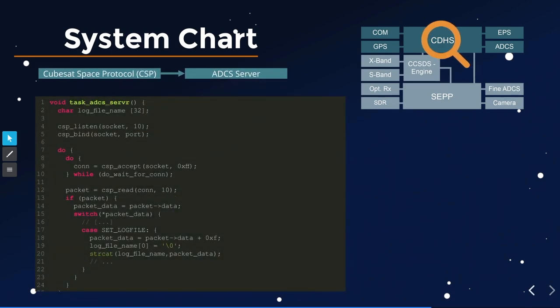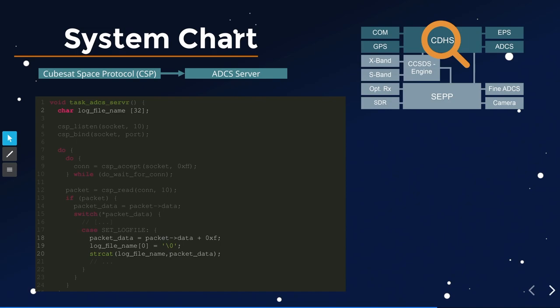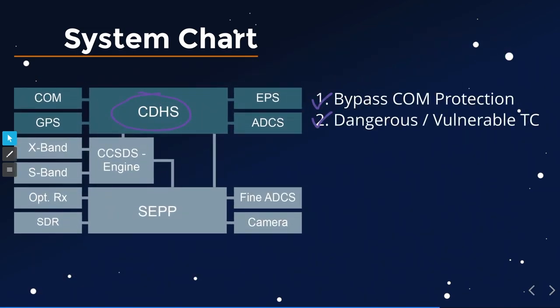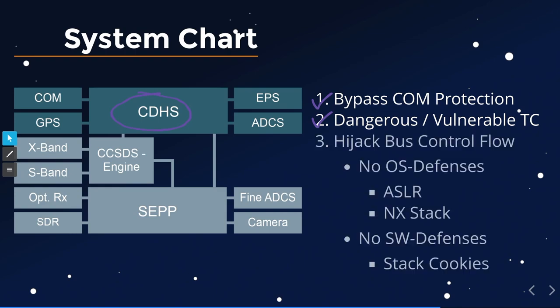Fortunately, we did find something in the upper CSP stack's ADCS server — where there's raw byte parsing. There's a set-log-file function that takes bytes after the 15th byte of the packet data and uses strcat to move things into a log file name buffer that is only 32 bytes long. That's a textbook stack buffer overflow. And this is all we need — with it, we can override the PC. But usually that's not enough.